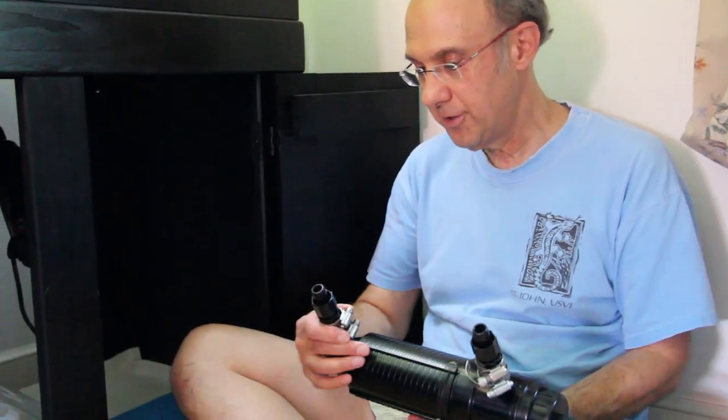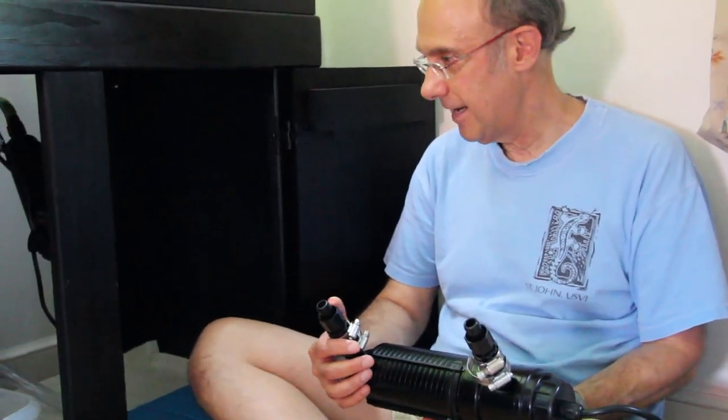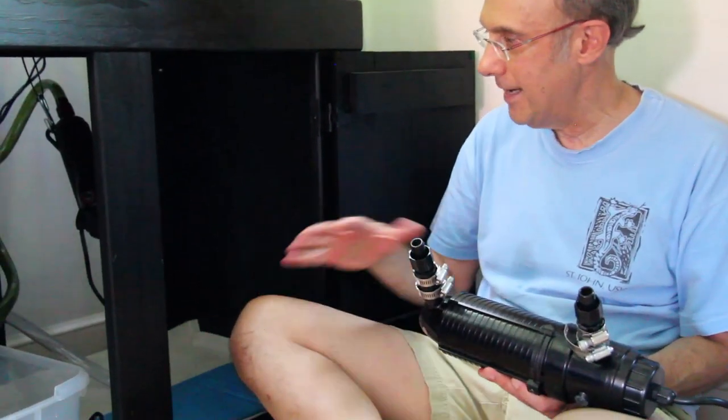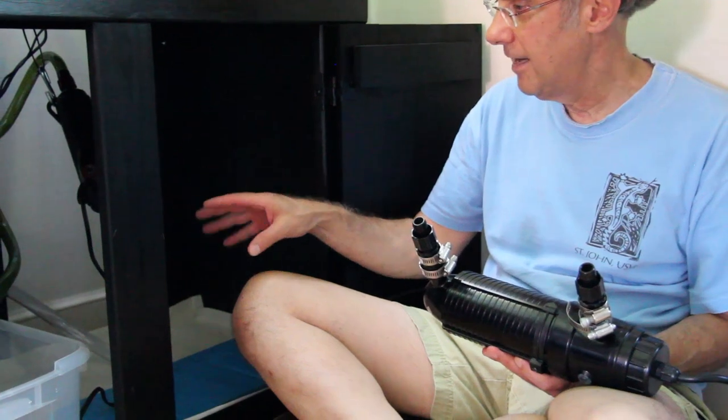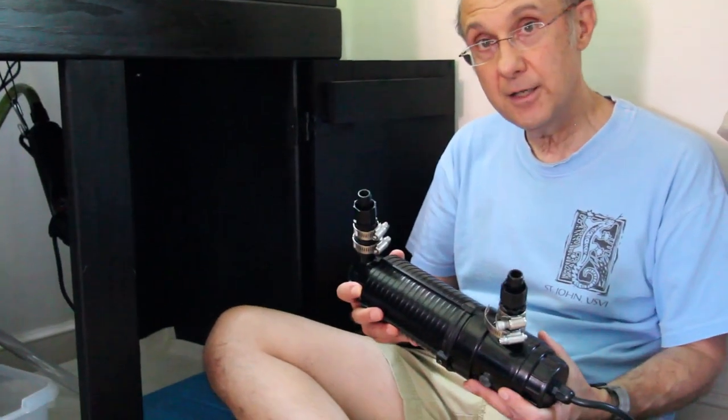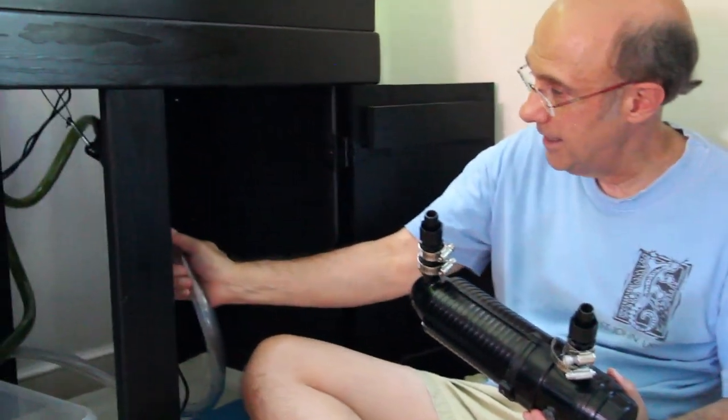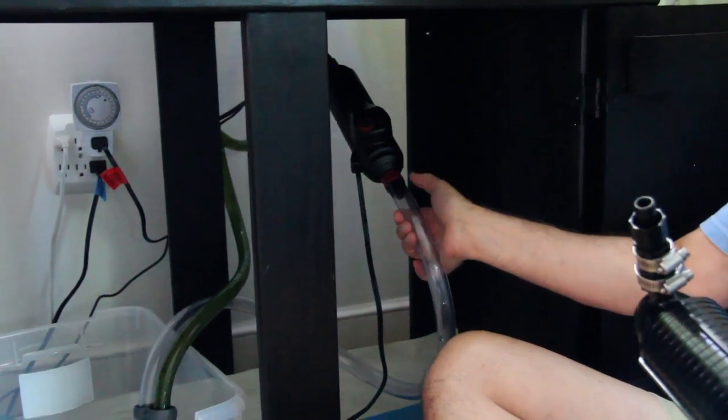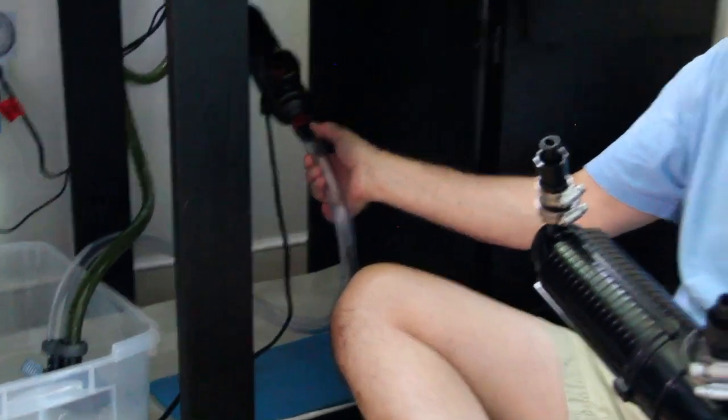So I've now screwed the fitting back into place, and I just want to do a quick go-over of what I'm going to do. The way the components are connected together, the output of the filter goes first into the UV, and then into the heater. Right now the UV is not in line, so what I have to do is remove the connector from the heater.